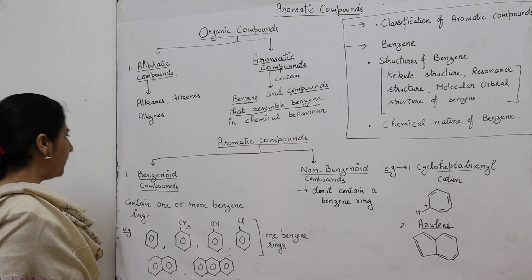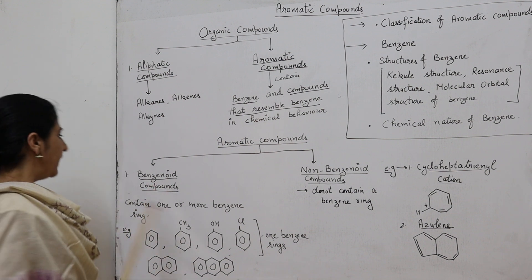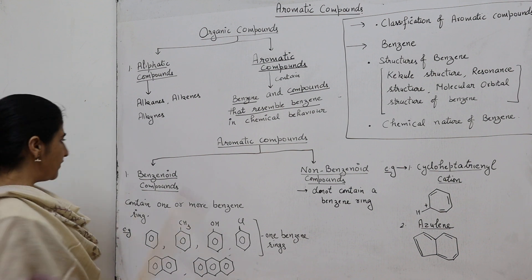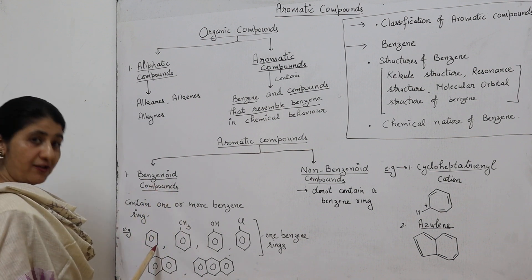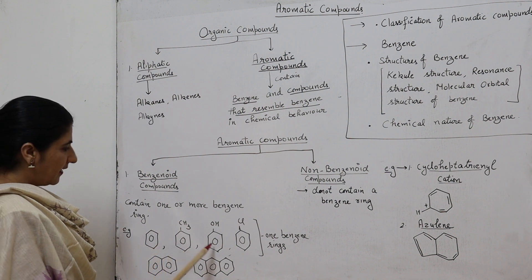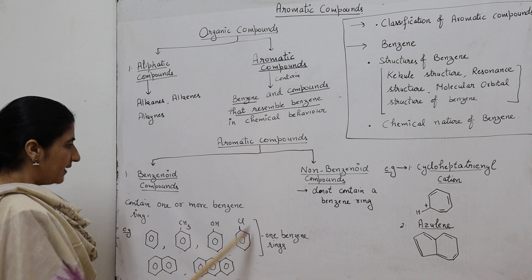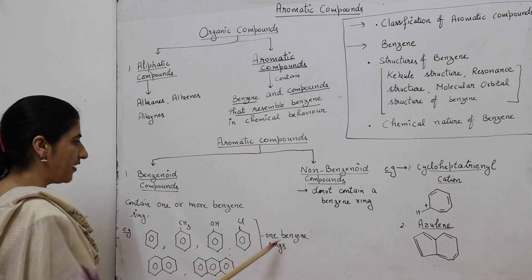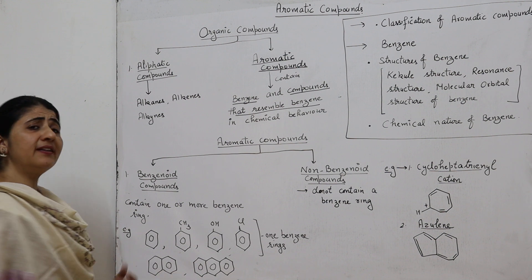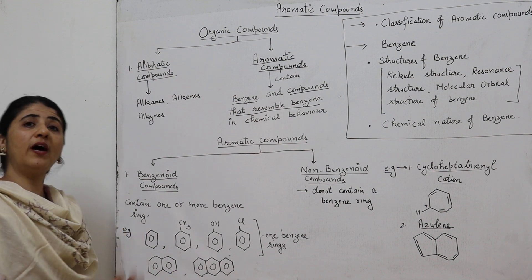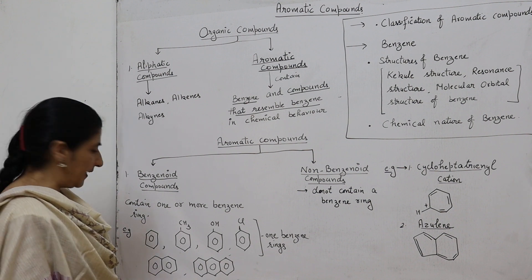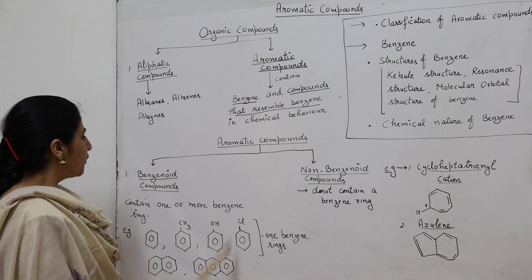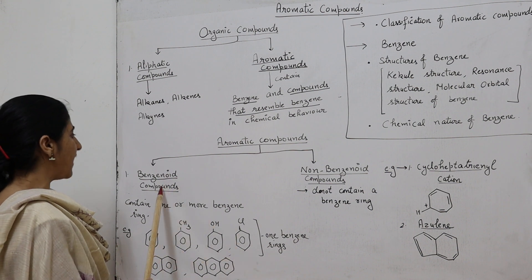Benzenoid compounds are those compounds that contain one or more benzene rings. Examples of benzenoid compounds include benzene, toluene, phenol, and chlorobenzene — these contain one benzene ring. Another example of benzenoid compounds that contain more than one benzene ring: naphthalene contains two benzene rings and anthracene contains three benzene rings. These are all examples of benzenoid aromatic compounds.